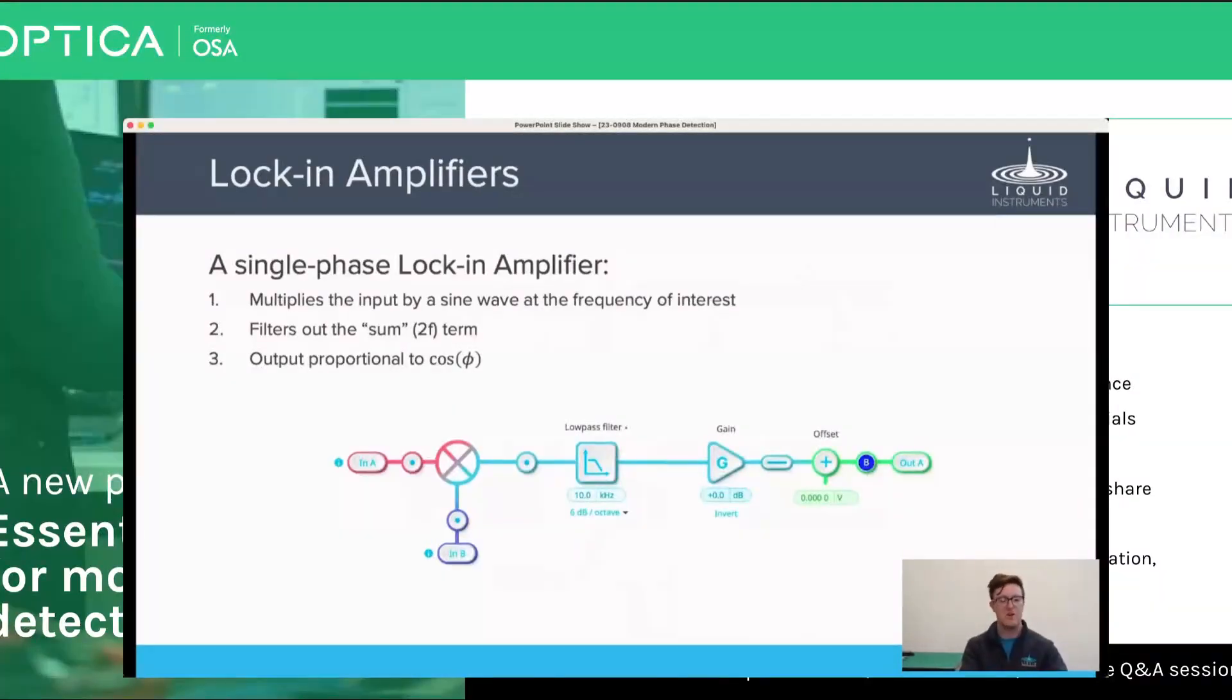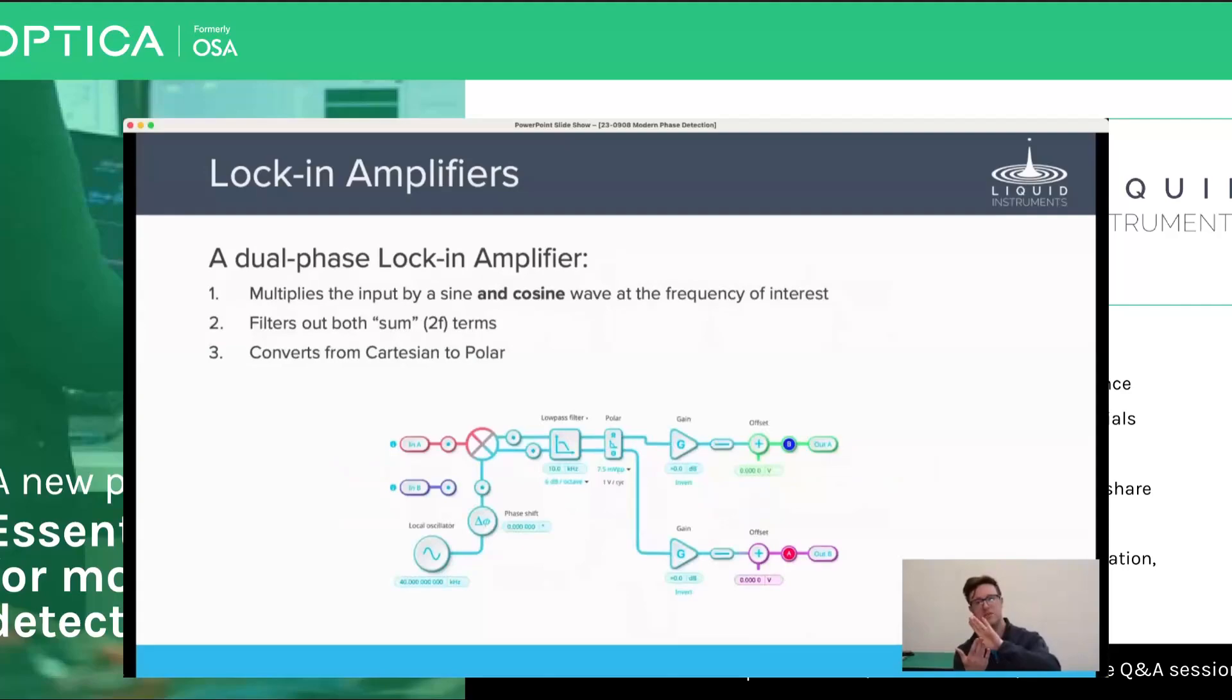You can do better though if you multiply not just by a sine wave, but actually a sine and a cosine, then at the other side you get r sin φ and r cos φ. And because you've then got two measurements that have r and φ in them, you can compute the amplitude and the phase independently of each other.